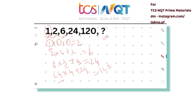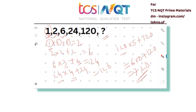Continuing the pattern: 120 × 5 + 120 = 600 + 120 = 720. So the missing number is 720. I hope your answer is the same as the actual answer. If it is, please comment down and I'll give you a heart.